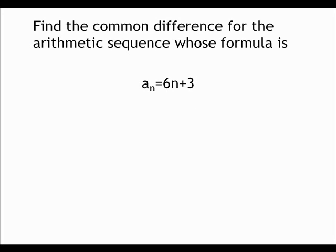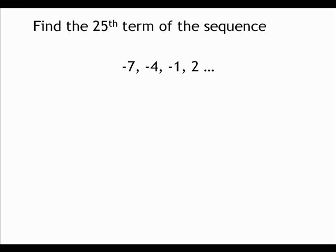Next example. Find the common difference for the arithmetic sequence whose formula is a sub n equals 6n plus 3. In this example, we need to find the first and second term or know the values of the sequence to find the common difference. To do so, we will substitute 1 and 2 to n since we need the first and second terms. The results will be 9 and 15, and to add more numbers to the sequence, the next values are 21 and 27. So the common difference is 15 minus 9, which is equal to 6.